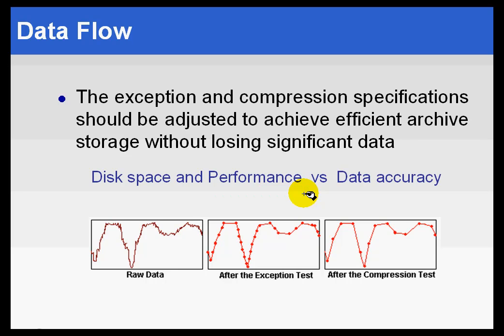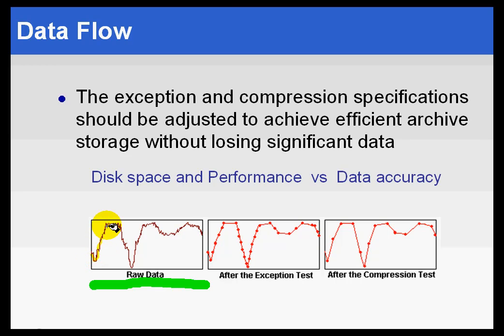We've learned over the years that if it takes longer than a second or two for people to retrieve their data, they just stop going to PI — they won't use it as much if it takes a long time. We would like for everybody to have well-tuned data so that performance is very fast. The trade-off is basically between the raw data complete with all the line noise — there's a tremendous amount of line noise that probably doesn't represent useful information — and that line noise is eliminated during the exception test. Looking at this point here, we're looking at data that has passed the exception test, so the line noise is gone.